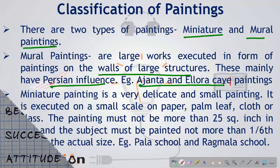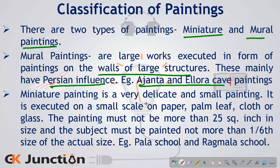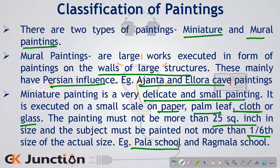Miniature paintings are very delicate and small paintings done mostly on things such as paper, palm leaf, cloth, or glass. Two important conditions are that the size of a miniature painting should not be more than 25 square inches, and the size of the subject in the painting should not be more than one-sixth of the actual size. Examples include those found in the Pala school and the Ragmala school of paintings.